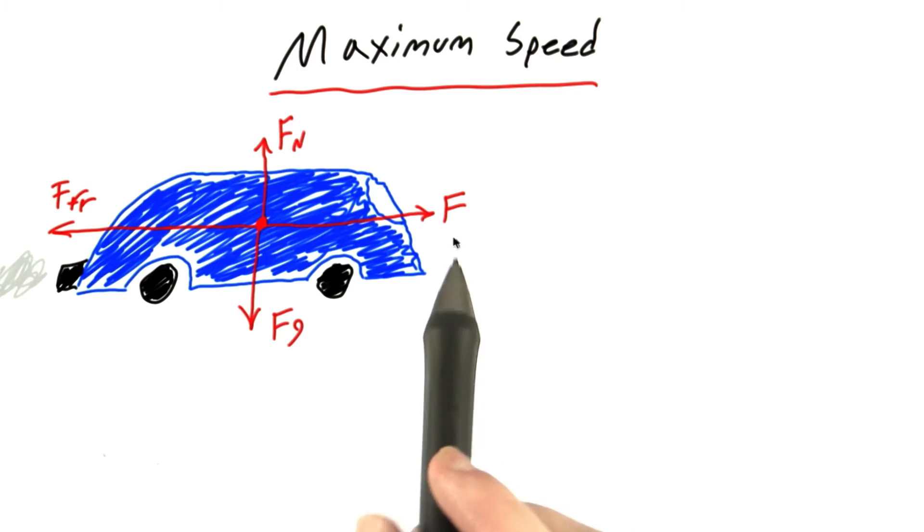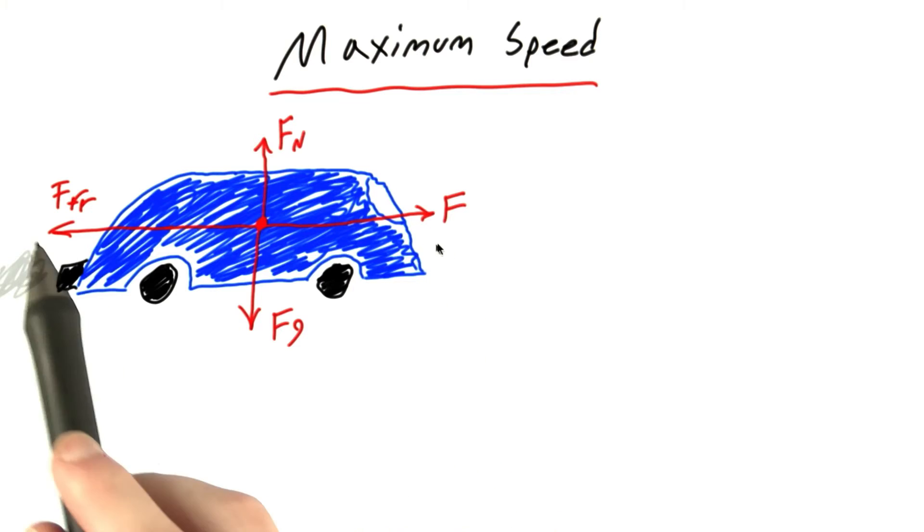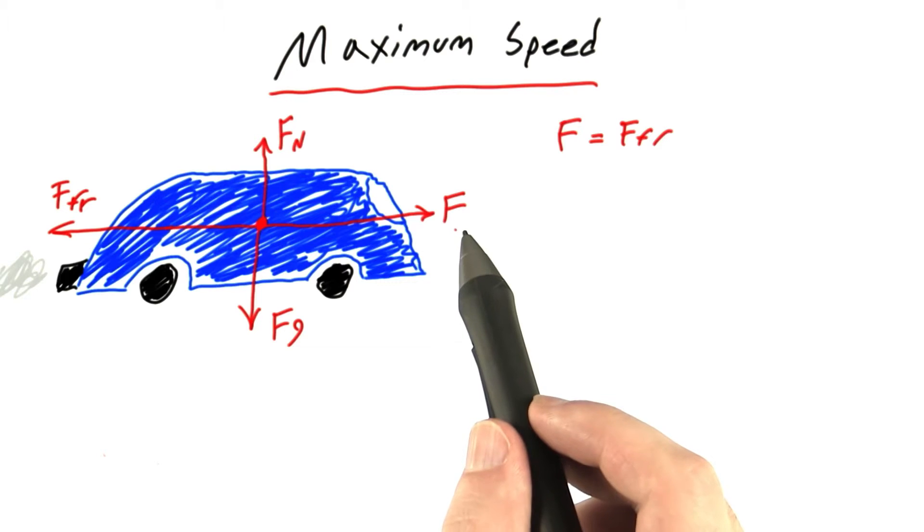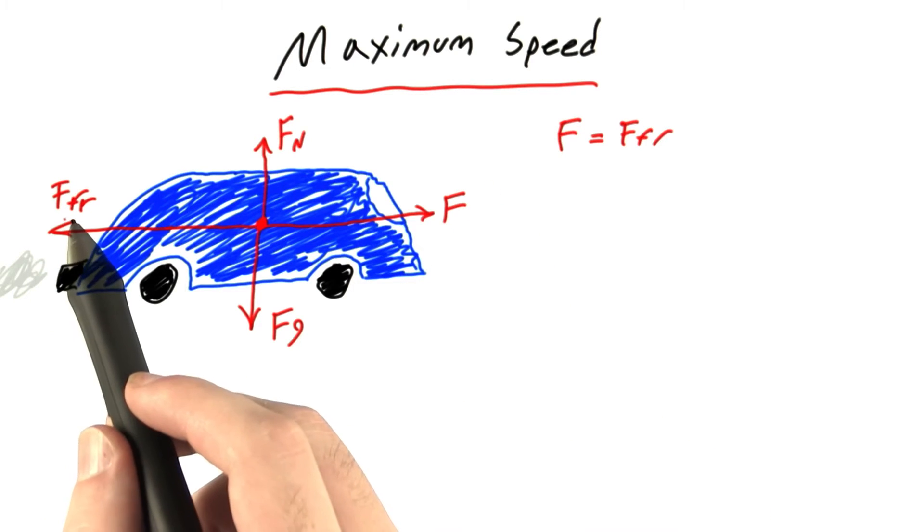And we know that if the car is going at its maximum speed and can't go any faster, then these two forces should be perfectly balanced too. So we can say that this force here equals this force over here.